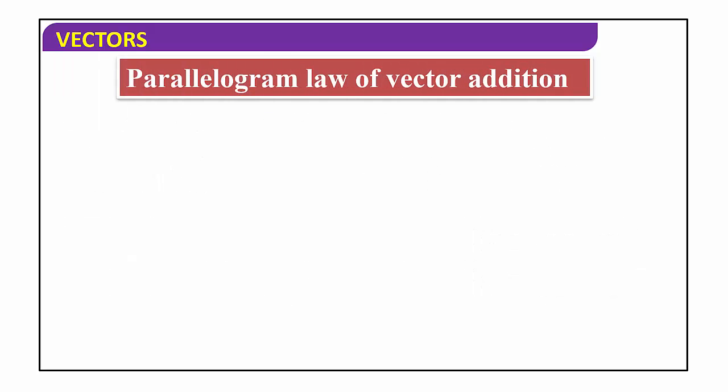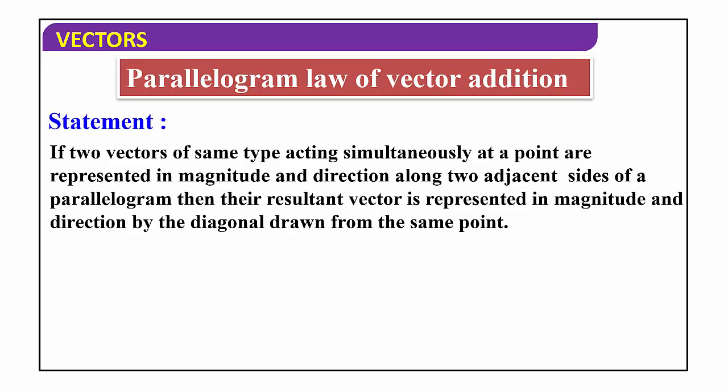Now we can study the third law: parallelogram law of vector addition. If two vectors of the same type acting simultaneously at a point are represented in magnitude and direction along two adjacent sides of a parallelogram, then the resultant vector is represented in magnitude and direction by the diagonal drawn from the same point. Observe the diagram — it will be very clear.